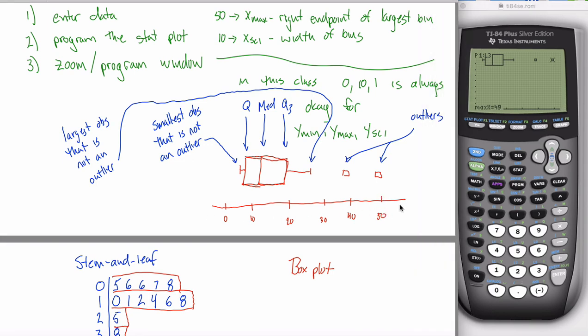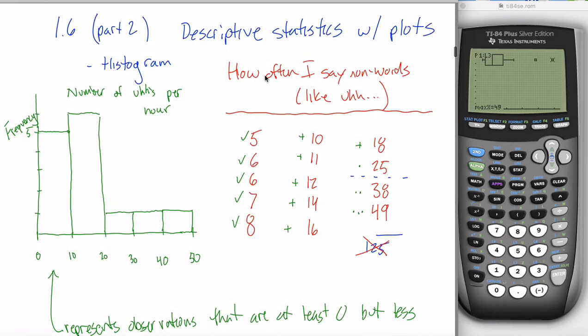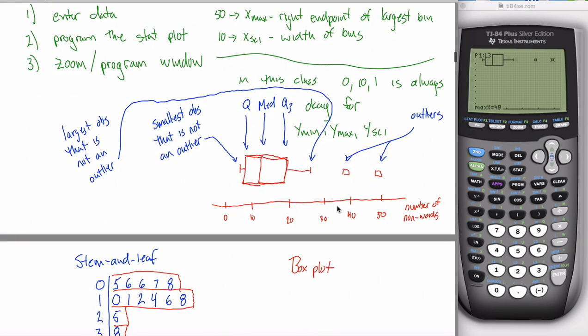So ideally, or what I will ask you to do is include an X axis. I'll say include a labeled and scaled X axis. So here's your X axis. It's now scaled. And to label it, I'd say something like number of non words, I think was what this example was about. This data set was tracking how often I say non words in a given hour, like uh or whatever. So your box plot would be everything that you see in red. And then everything in blue is just there for your notes.